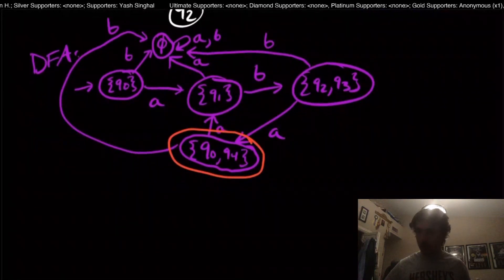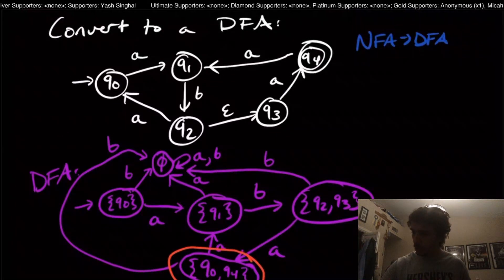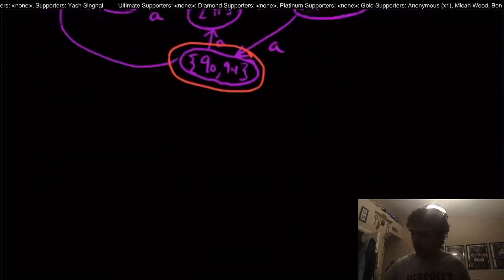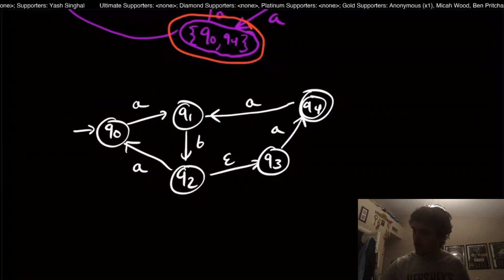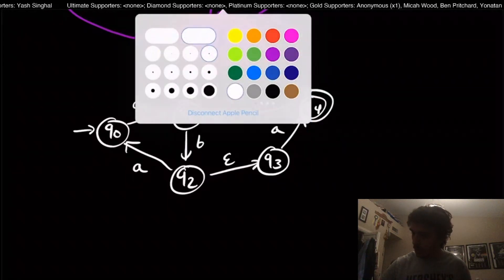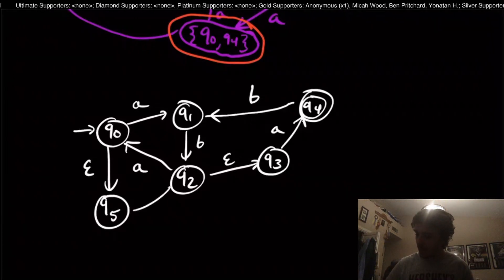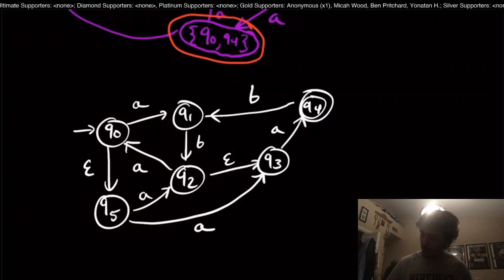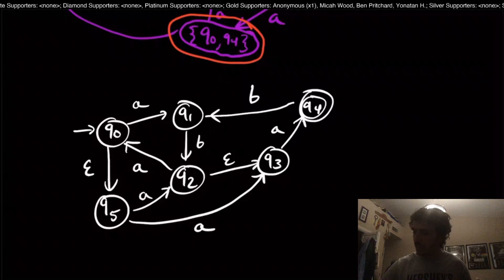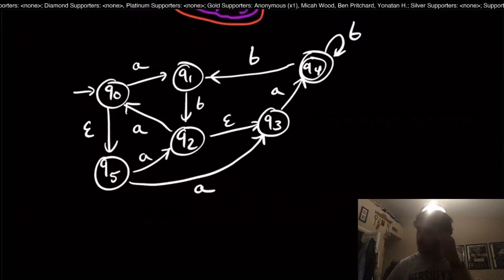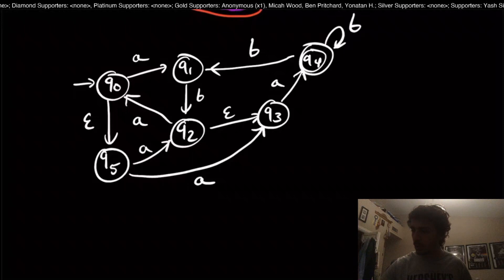Now let's do a slightly more complicated example. I'm going to copy and paste this NFA and slightly modify it. I'll add a B transition, an epsilon transition to a new state q5, an A transition from q5 to q2, another A transition, and a self-loop on B for q4. I just made this NFA up — I don't know how big the DFA will be, but let's try.